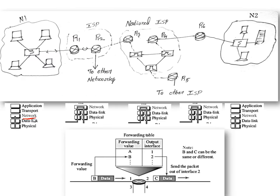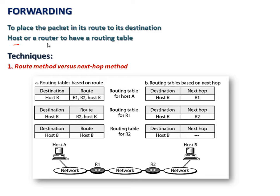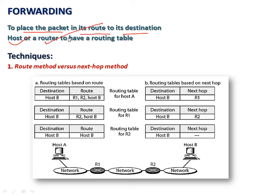The basic roles of the network layer are: first, to packetize the data; and second, to find the best path and forward the packet. When a host or router has a packet to be transmitted, it must have a routing table or forwarding table containing all information about the destination. Forwarding is defined as placing the packet on its route to its destination, and both hosts and routers must have a routing table containing all information about the destination host.